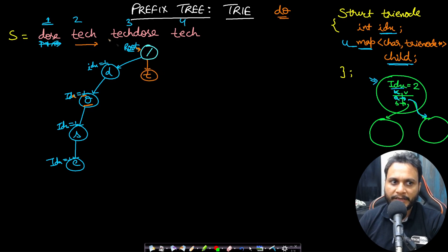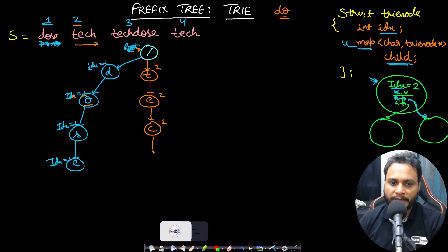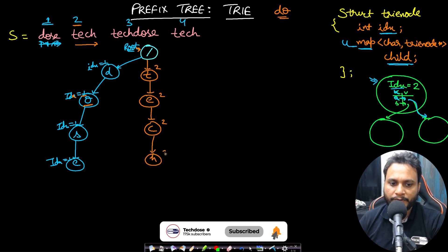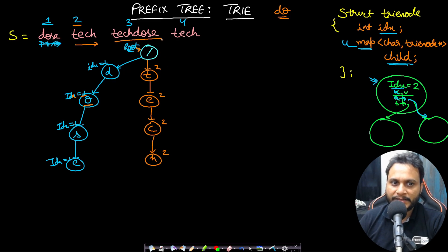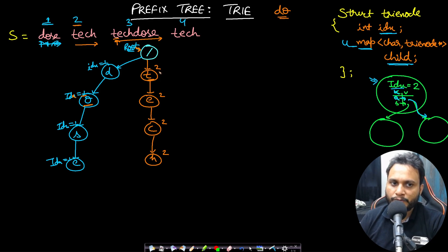If I do that, then 't' with index 2, 'e' with index 2, 'c' with index 2, and 'h' with index 2 will be inserted. Now, whenever I make a new node, only then will I insert the index. If the node already exists, I will not overwrite it. Now let's see for 'techdose' — if I try to insert it, I start at the root node and go to 't.' I already have a pointer to 't,' so the node 't' already exists with index value 2, so I will not overwrite it to 3.